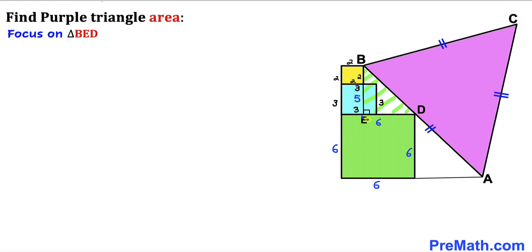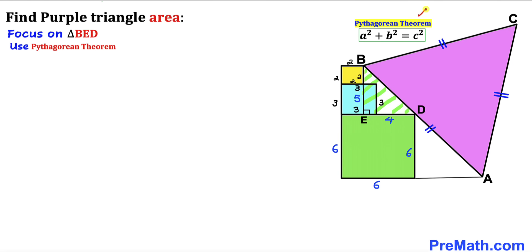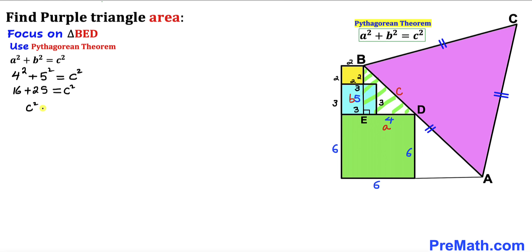Side length ED is going to be 2 units. Now we are going to use the Pythagorean theorem to find side length BD. Our formula is a² + b² = c², where BD is the hypotenuse c. So we have 4 squared plus 5 squared equals c squared, giving c squared equals 41. Taking the square root, BD equals the square root of 41.